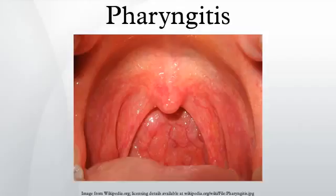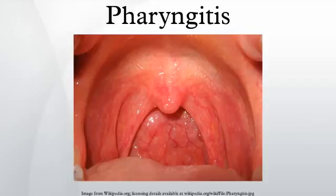Infectious mononucleosis, caused by the Epstein-Barr virus, may cause significant lymph gland swelling and an exudative tonsillitis with marked redness and swelling of the throat. The heterophile test can be used if this is suspected. Herpes simplex virus can cause multiple mouth ulcers.